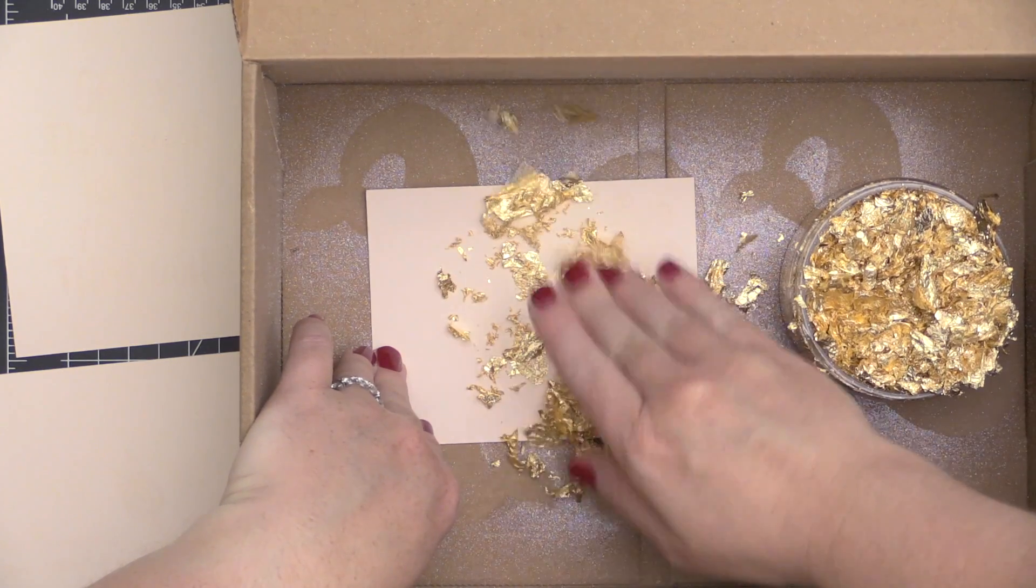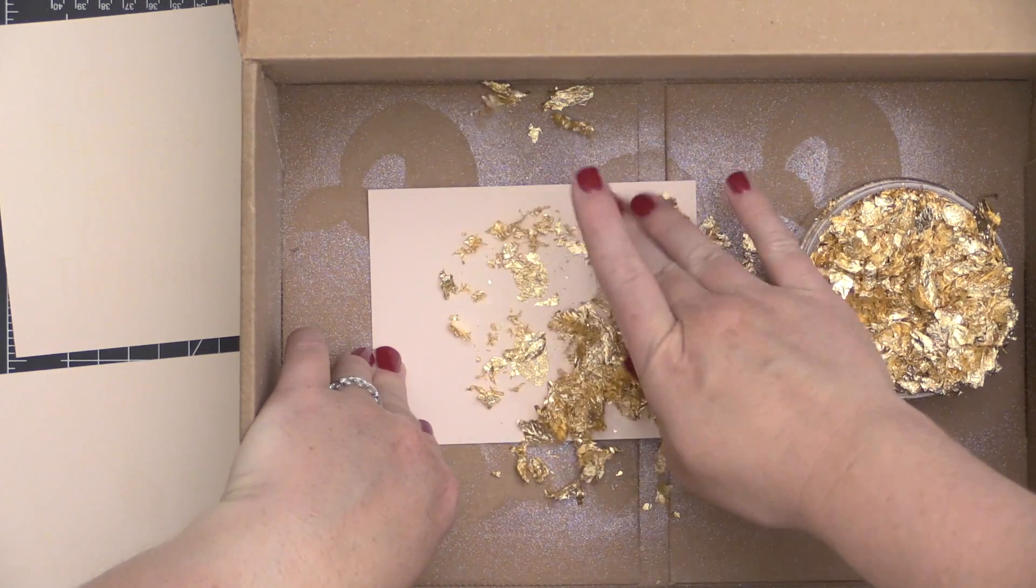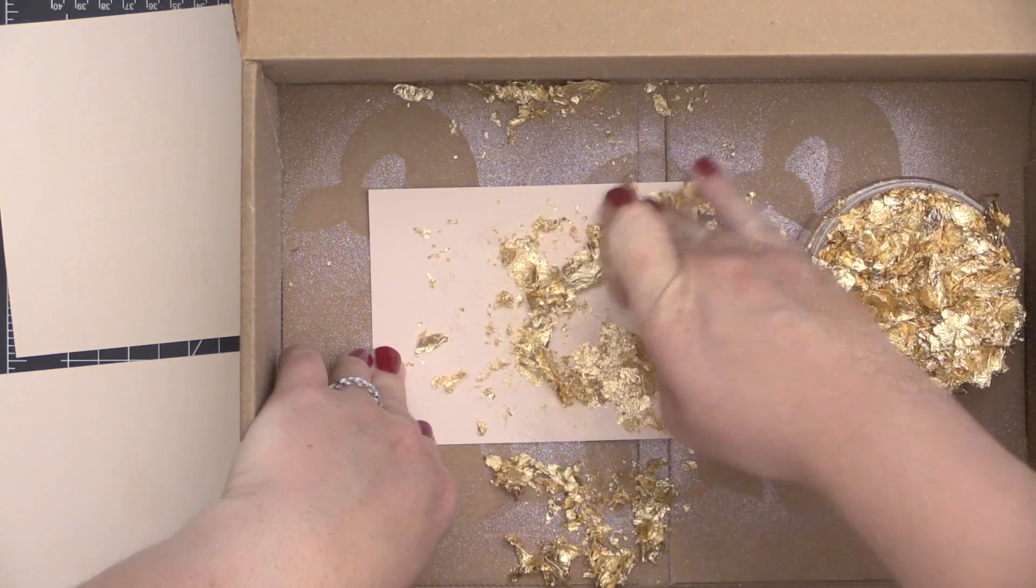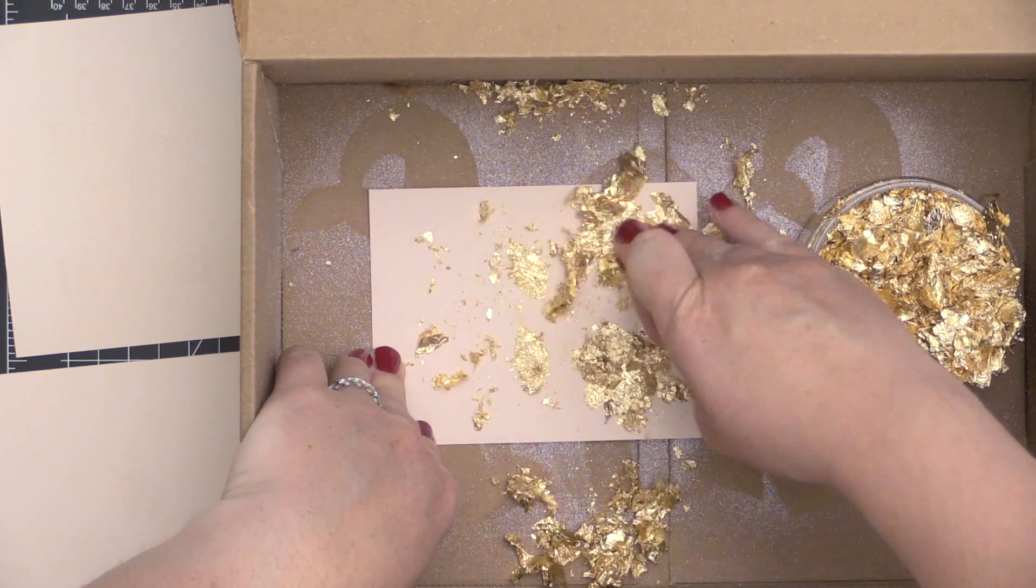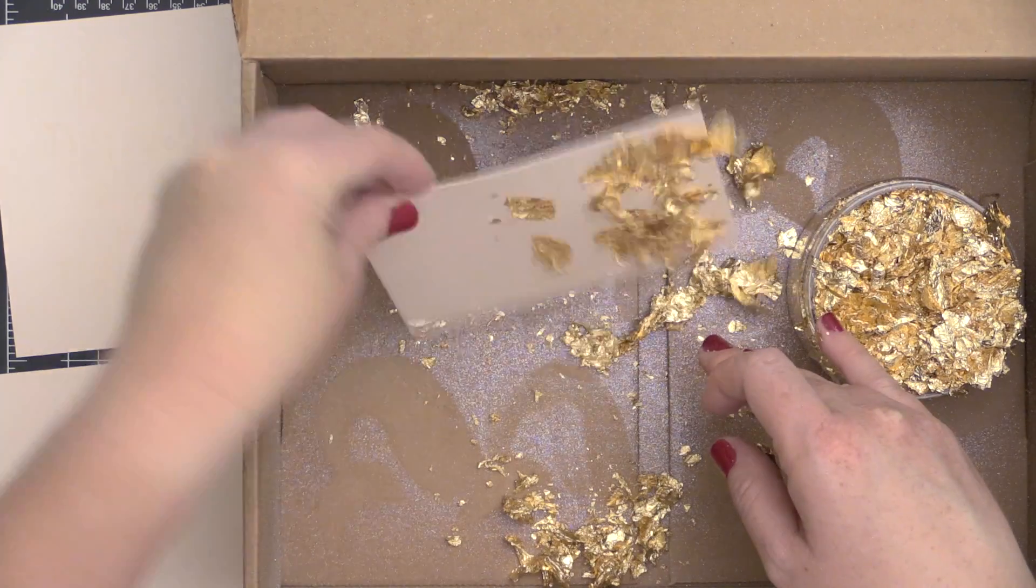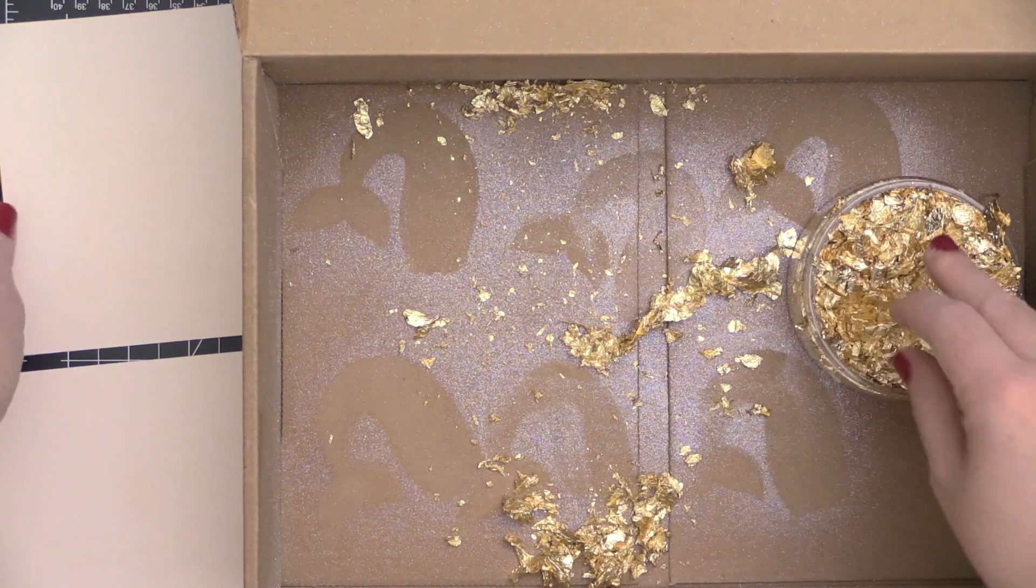What this embossing powder does is it sets up sticky so that you can adhere things like gilding flakes or glitter or flocking to it. I'm just taking the Nouveau gilding flakes in the gold and pressing them onto those areas that I've embossed with that sticky embossing powder.